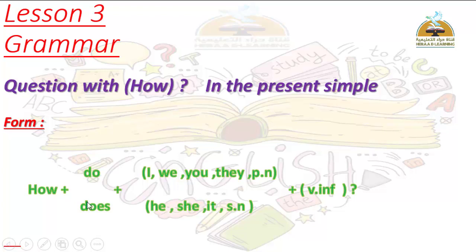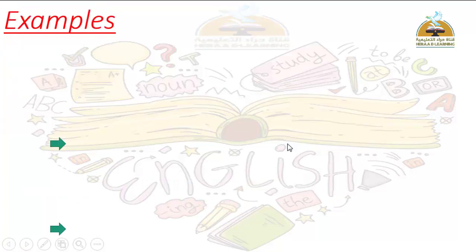So the form is: How + Do or Does, depending on the subject. With Do: I, We, You, They, plural noun + verb infinitive. With Does: He, She, It, singular noun + verb infinitive. Let's look at some examples together.